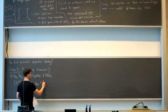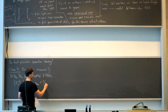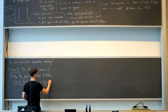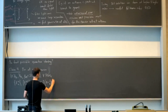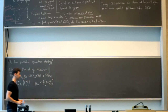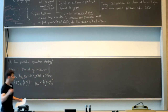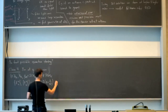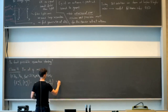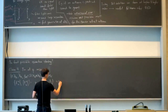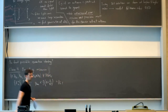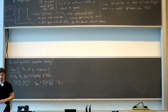For all quantum strategies — meaning for all Hilbert spaces for Alice and Bob, all possible bipartite states on these Hilbert spaces, and all possible POVMs E^x_a and F^y_b — it holds that the winning probability with the quantum strategy is upper bounded by one half times (1 + 1/√2), which is approximately 68%.